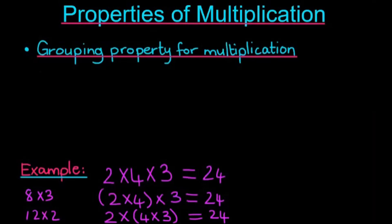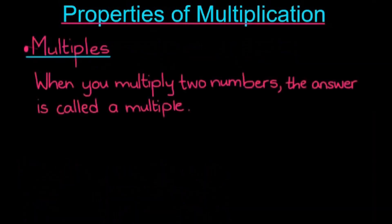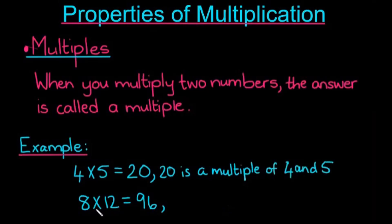So multiples. When you multiply two numbers, the answer is called a multiple. So if I have 4 times 5, which is equal to 20, this means that 20 is a multiple of 4 and 5. At the bottom here, I have 8 times 12, which gives me 96, which makes 96 a multiple of 8 and 12.